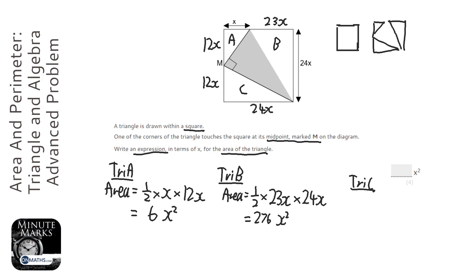Triangle C, same thing again, half times the base, which is 24x, times the height, which is 12x. And again, it's a very similar question to the one before, so we're going to do x times x, which is x squared, and we're going to do half times 24 times 12, or I could half the 24 to make 12, 12 times 12 is 144.